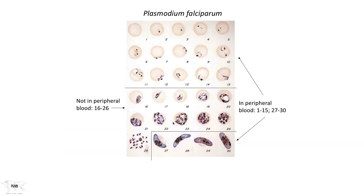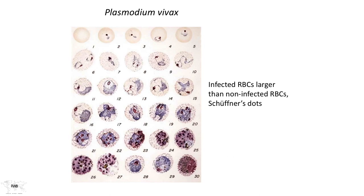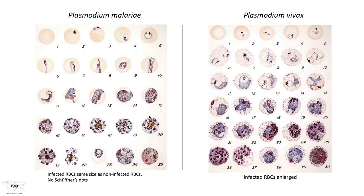Underneath the microscope, the morphology of each species is unique. We can tell whether the patient is infected with Plasmodium falciparum by finding uniquely shaped gametocytes, or the enlarged red cells associated with Plasmodium vivax, or the band forms only associated with Plasmodium malariae.